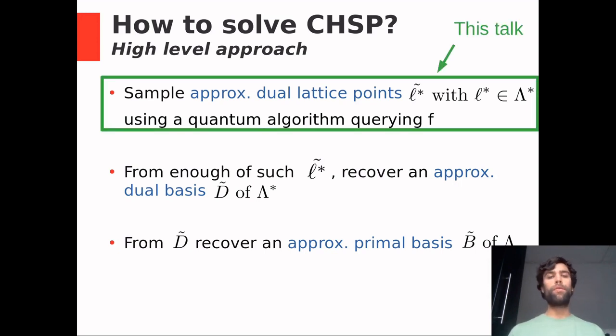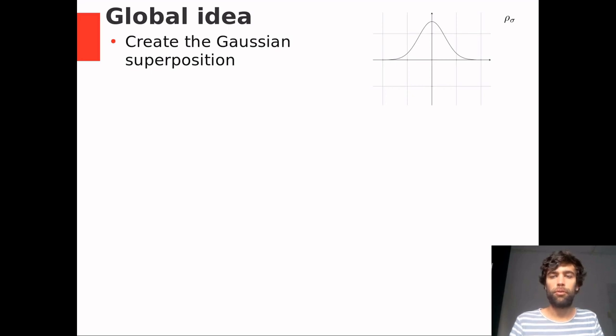In this talk, we will focus on the first step. This is the quantum step. So let's look at the global idea of the first step, the quantum step, that extracts dual lattice points. We will for now assume that we have an infinite number of qubits. This allows us to describe the states as quantum wave functions. And the algorithm is way easier to understand in terms of those wave functions. So let's start. The initial wave function is the Gaussian superposition. This particular choice is our contribution. It makes it way easier to analyze later on.